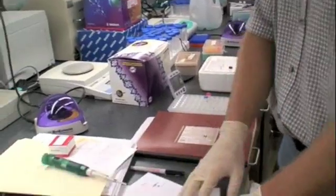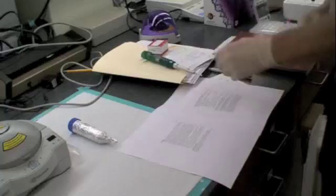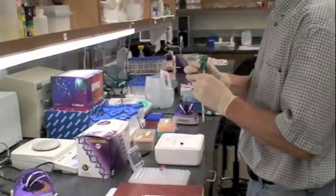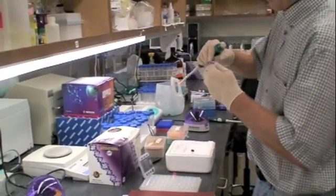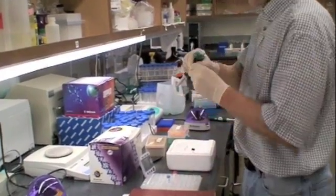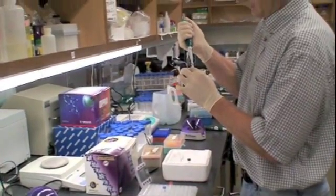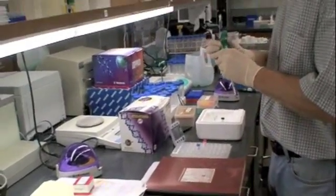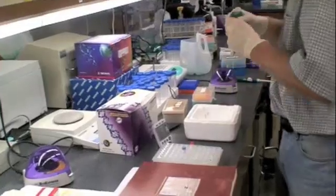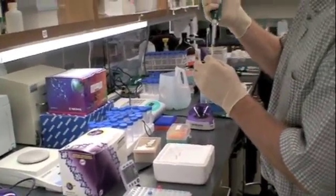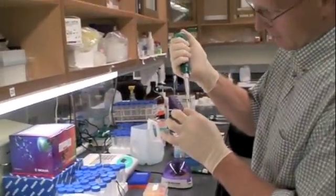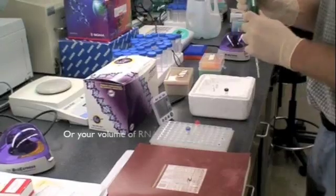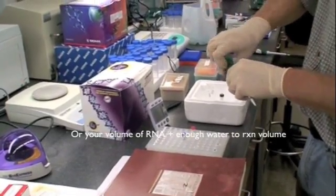So the instructions here for the VILO say, first of all, we need 4 microliters of the reaction mix or the buffer. Put that into the cDNA tube. We need 2 microliters of the VILO. And for 20 microliters of volume, we need to add 14 of our RNA.